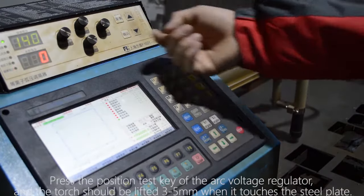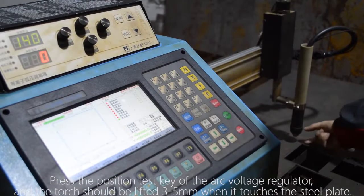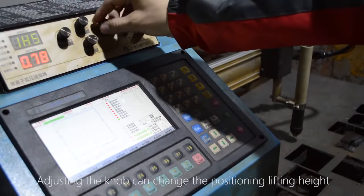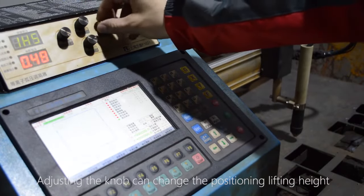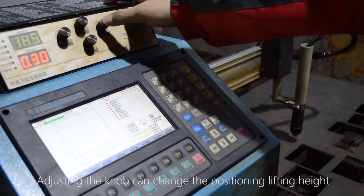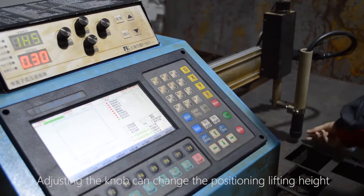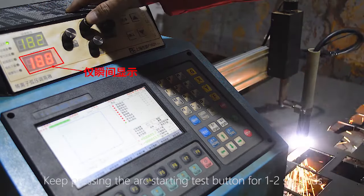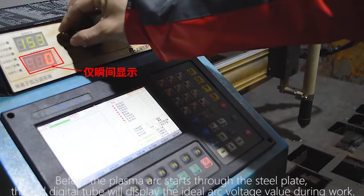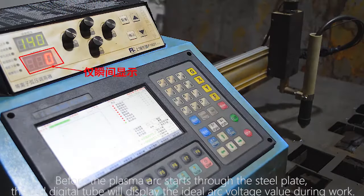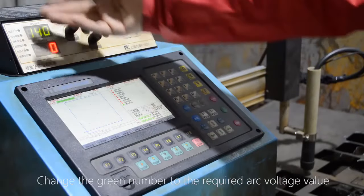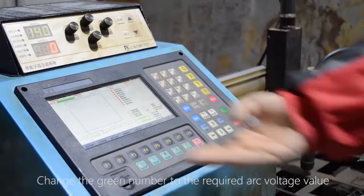Press the position test key of the arc voltage regulator and the torch should be lifted 3 to 5 ohm when it touches the steel plate. Adjusting the knob can change the positioning lifting height. Keep pressing the arc starting test button for 1 to 2 seconds. Before the plasma arc starts through the steel plate, the red digital tube will display the ideal arc voltage value during work. Change the green number to the required arc voltage value.